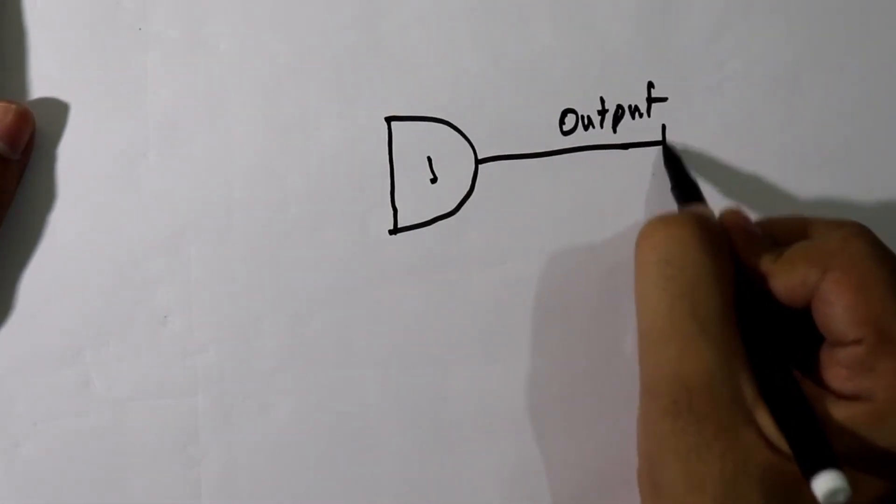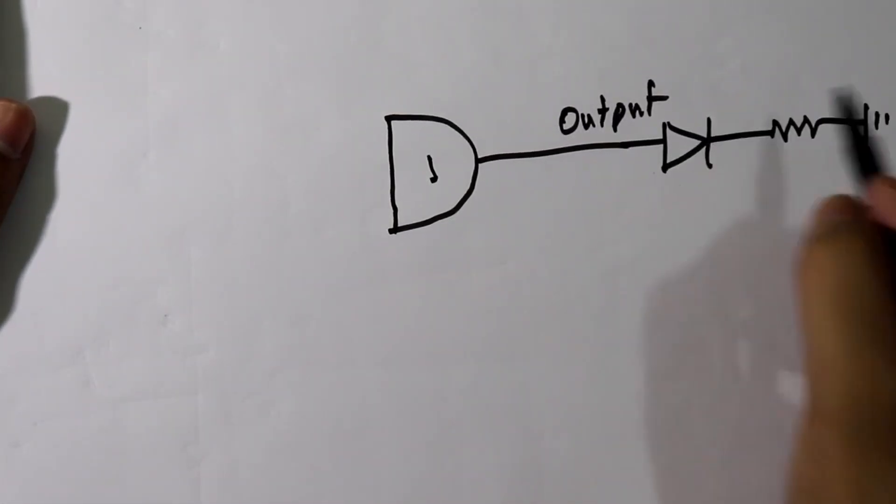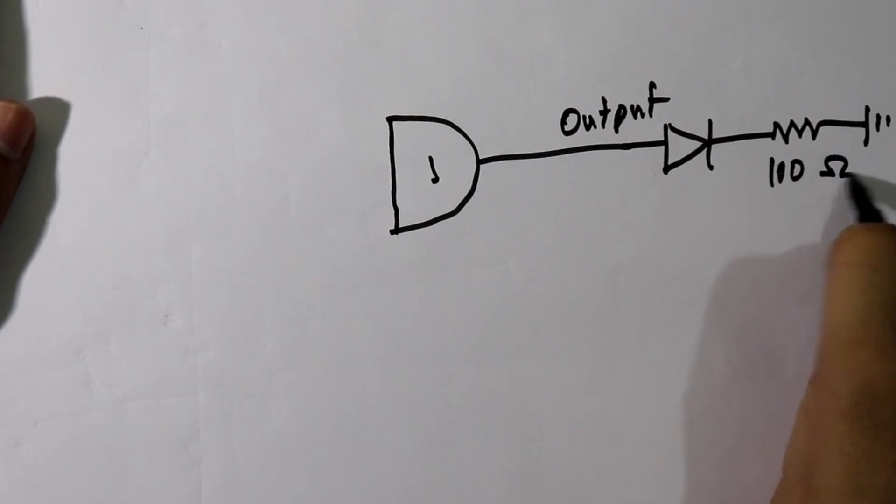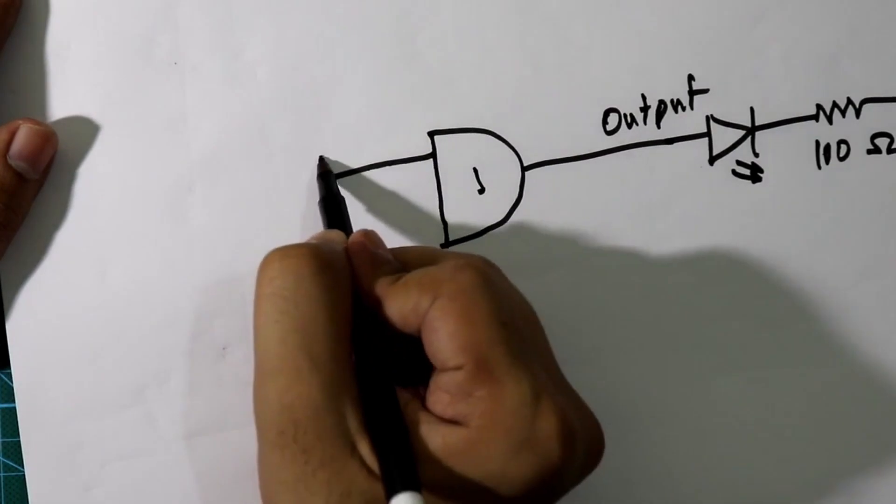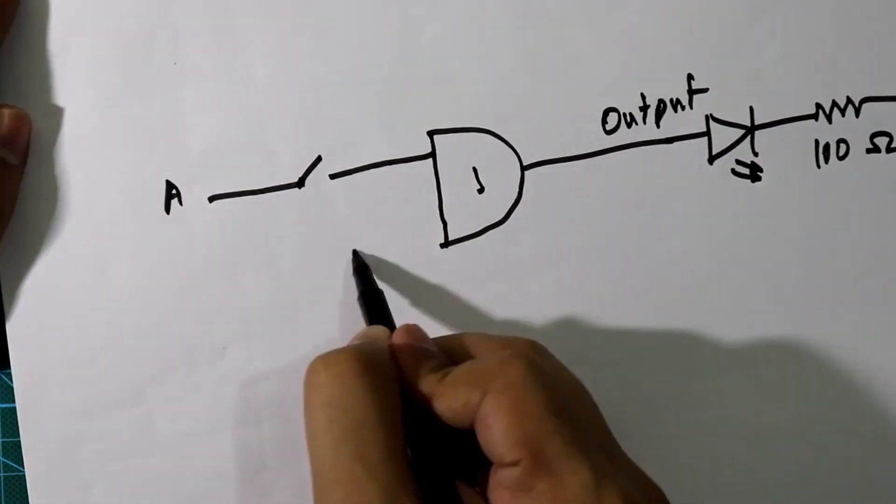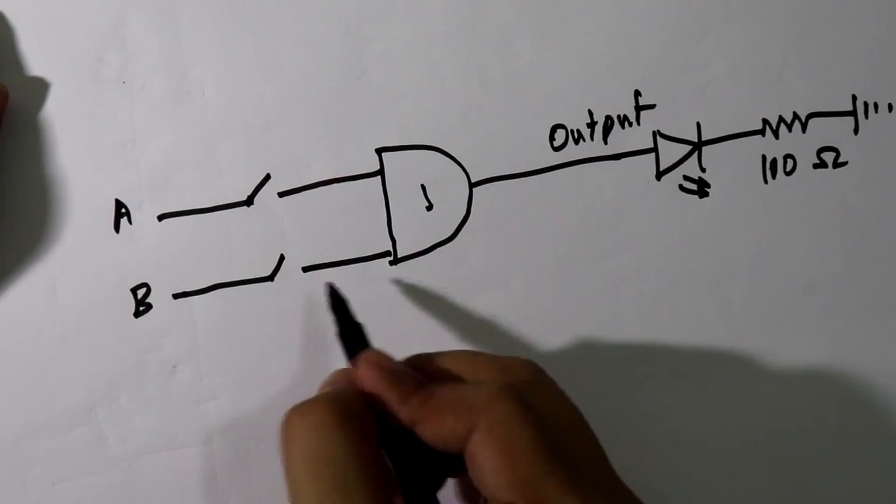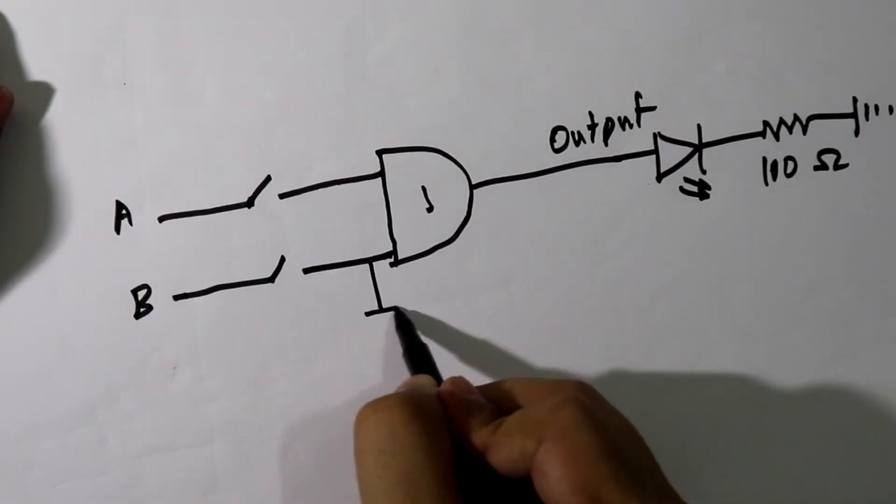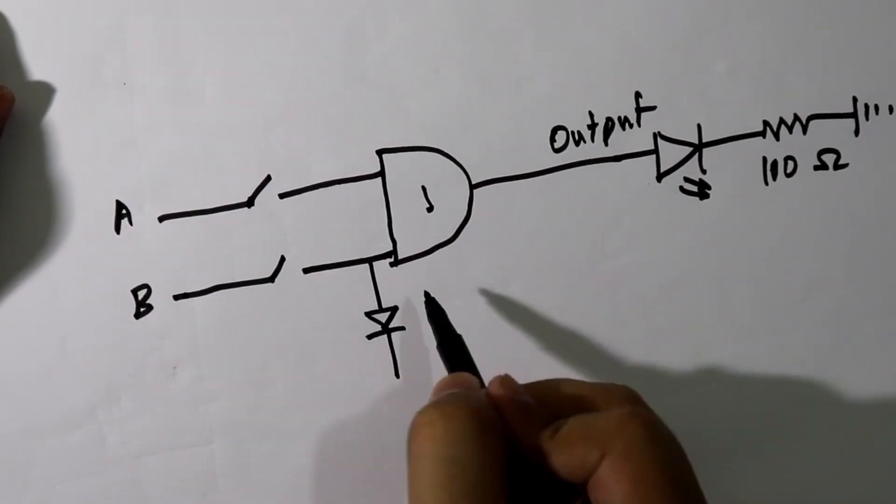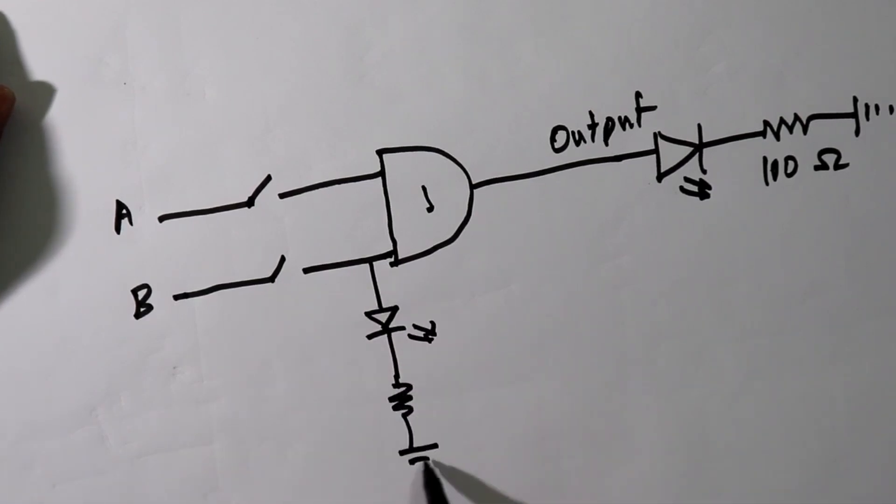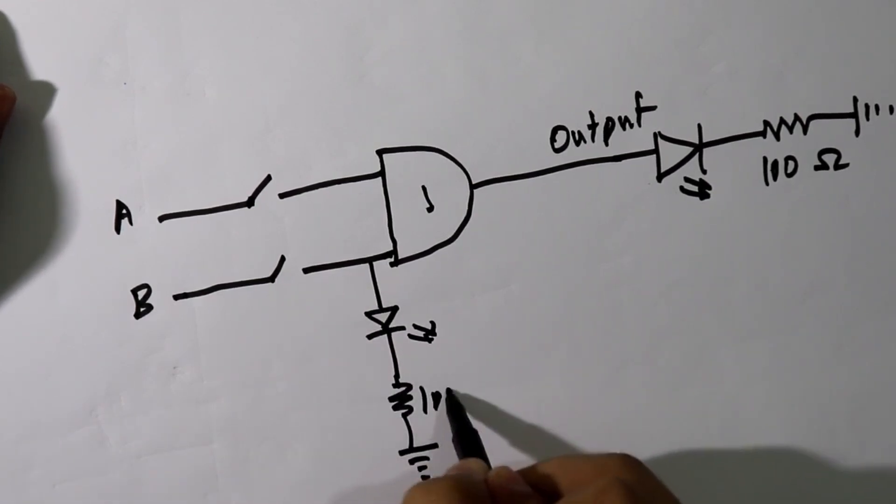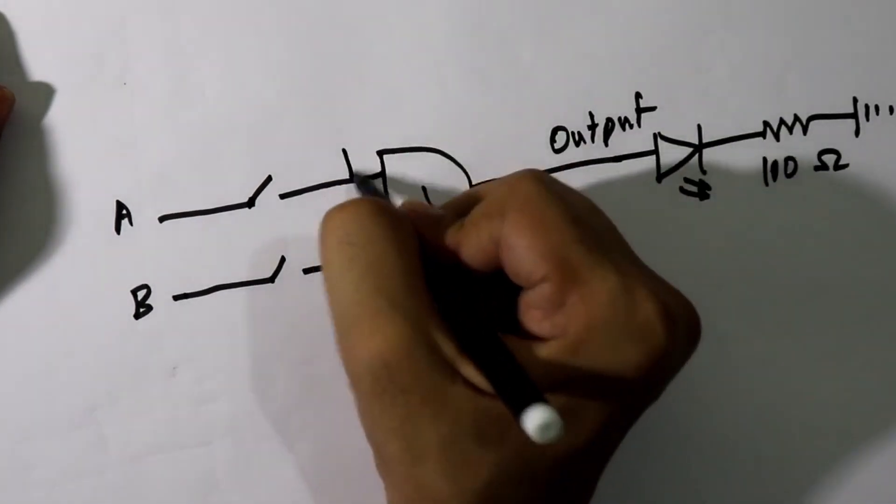We will connect one LED here and it is 100 ohms. Here it is LED and with the input we will connect one switch here. Here also. And with this input we will connect one LED, input LED. So whenever this switch is turned on this LED will glow. And it is connected to the ground. That is 100 ohms. Here also.